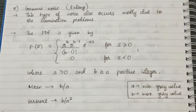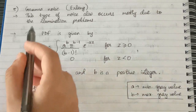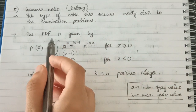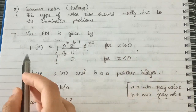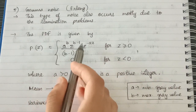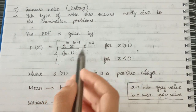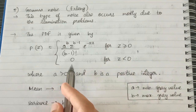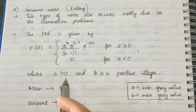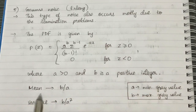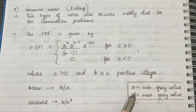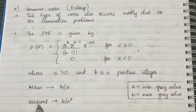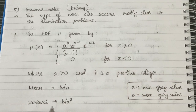Next is gamma noise, also known as Erlang noise. This type of noise also occurs mostly due to illumination problems. The PDF is: p(z) = (a^b · z^(b−1)) / (b−1)! · e^(−az) for z ≥ 0, and 0 for z < 0, where a > 0 and b is a positive integer. Here a is the minimum gray level value and b is the maximum gray level value. The mean is b/a and the variance is b/a².